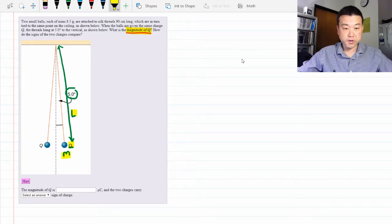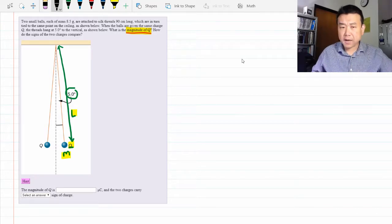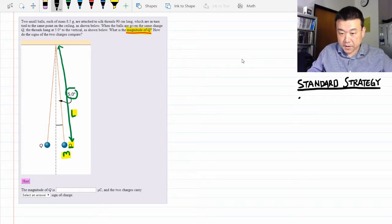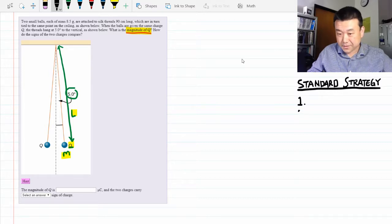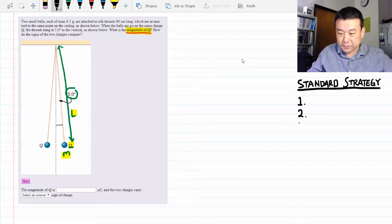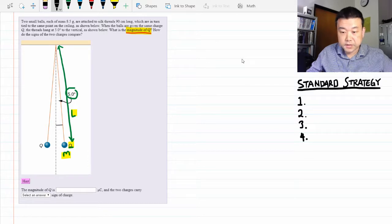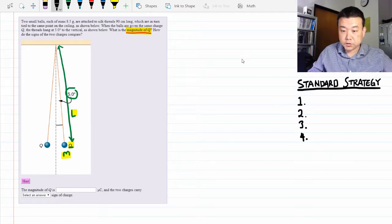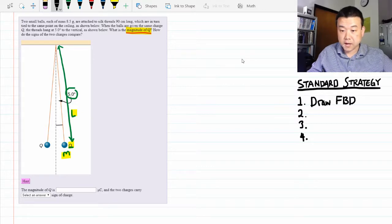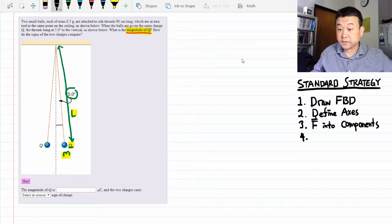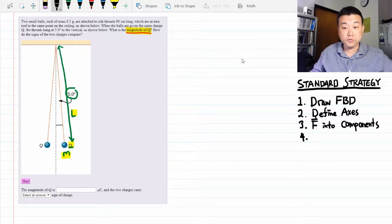This is what we call standard strategy. It's a four-step strategy. Let me outline it for those of you who might have forgotten. I'm going to be brief in my description of each step because I want to keep this video short. The first step is you draw a free body diagram. The second step is you define coordinate axes. The third step is you break down forces into components. And the fourth and final step is you write down Newton's second law equation.